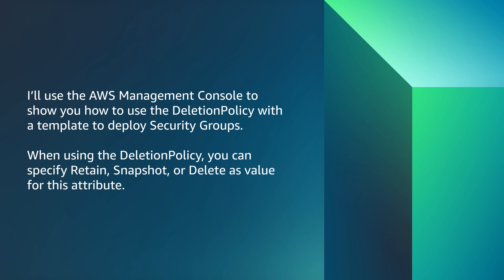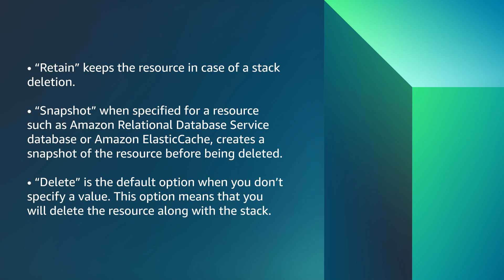When using the deletion policy, you can specify retain, snapshot, or delete as a value for this attribute. Using the attribute retain keeps the resource in case of a stack deletion. Snapshot, when specified for a resource such as Amazon RDS or Amazon ElastiCache, creates a snapshot of the resource before being deleted. Delete is the default option when you don't specify a value, meaning the resource is deleted along with the stack. Refer to the AWS documentation to learn additional details about these options.